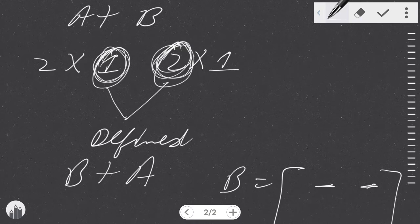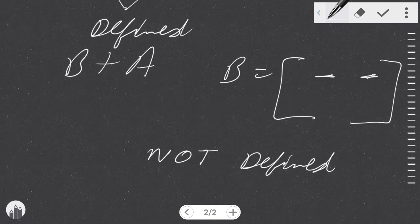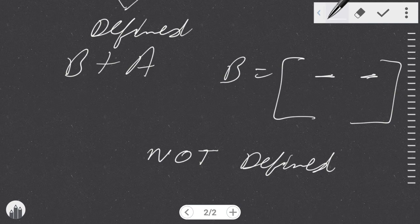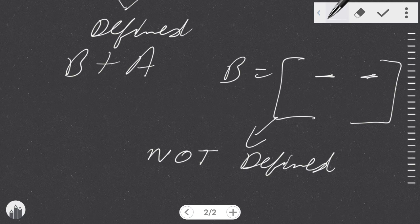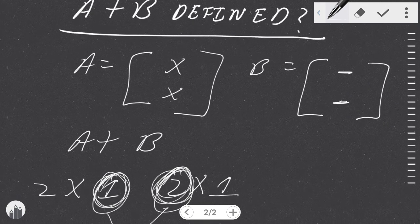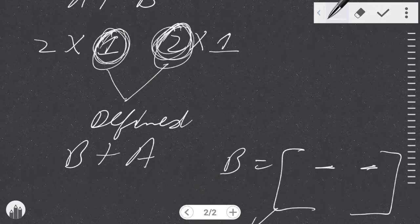That is the same for A plus B or B plus A. So when it comes to addition, you just have to see whether they're in the same dimensions or not. Say, for instance, if we had a B matrix which had one row and two columns, then it would be not defined. But if you're working with two matrices which have the same dimensions, i.e., two rows and one column, then yes, they are defined.